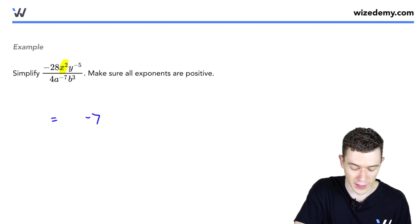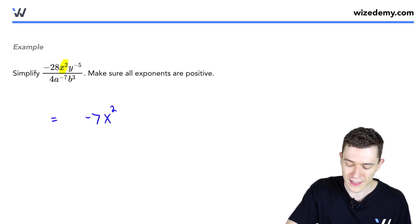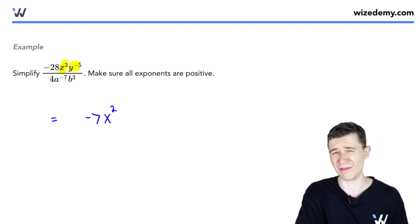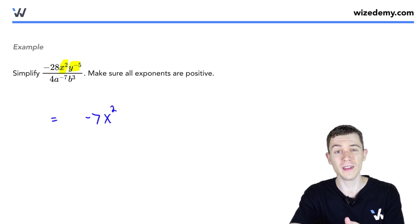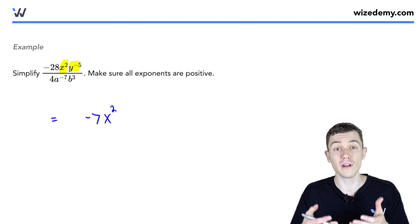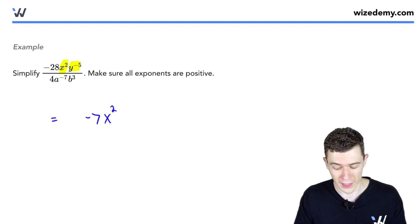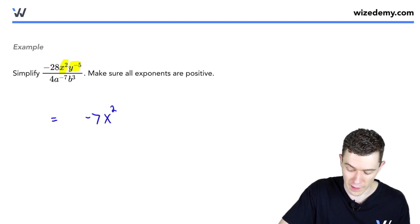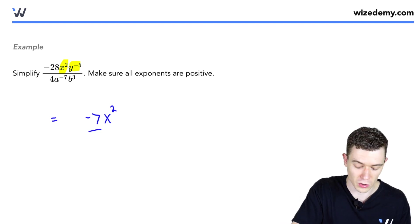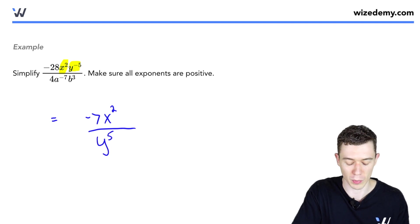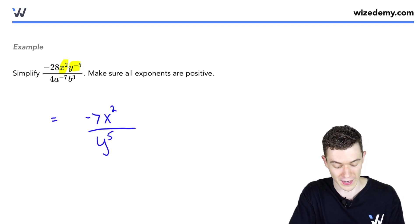The next term is that x squared in the numerator — it already has a positive exponent, so we leave that alone. But next in the numerator we have y to the negative 5. That's a negative exponent, so we turn it into a positive exponent by putting it in the denominator. Now y to the 5th is positive, but it goes downstairs.